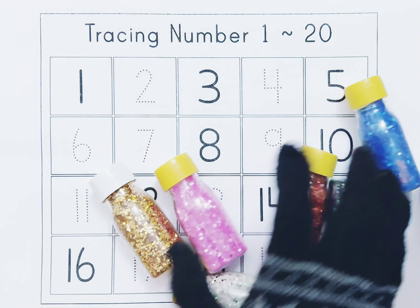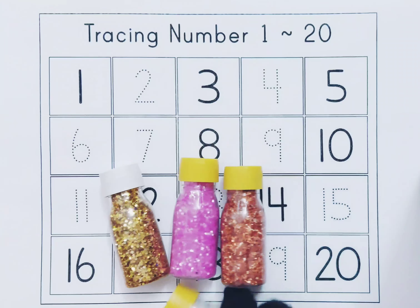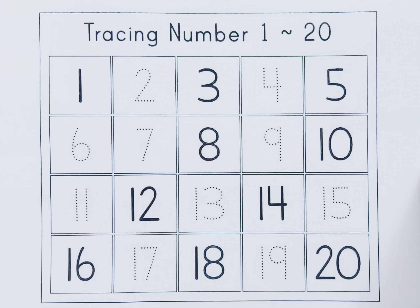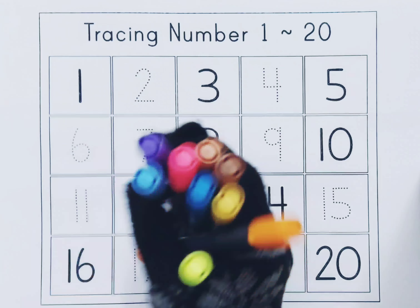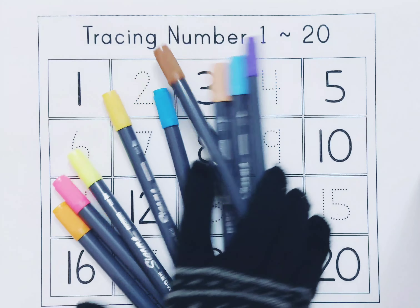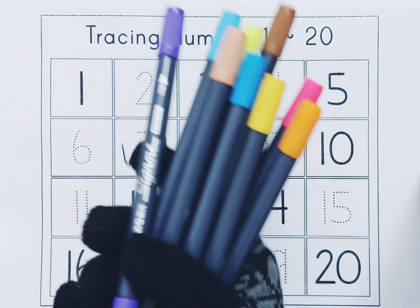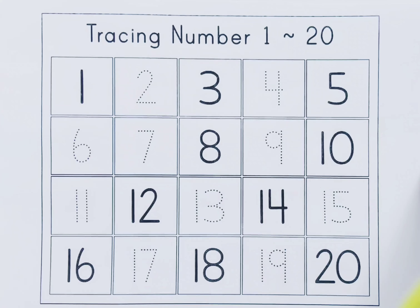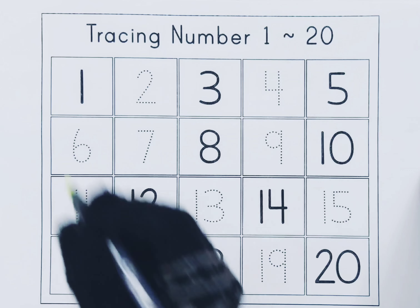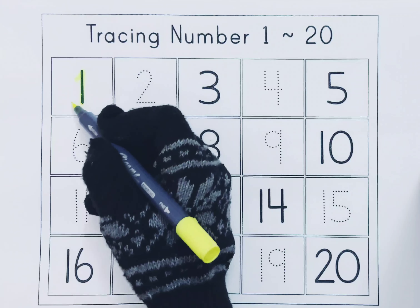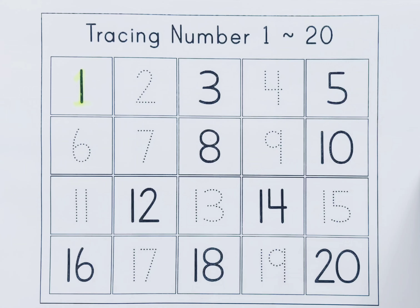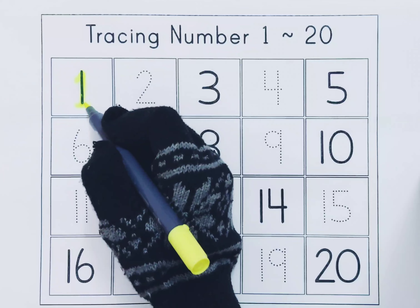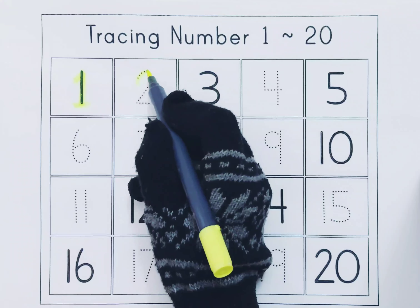Learn Counting. This is 1 - O-N-E - 1. This is 2 - T-W-O - 2.